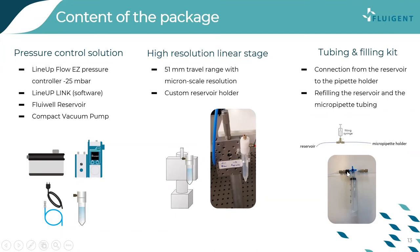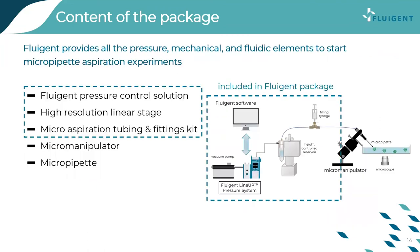There is a two-way valve that allows injection either into the reservoir part or the micropipette holder part. Thanks to this, you don't need to remove the reservoir and refill it — instead, simply use the tubing and filling kit to refill the reservoir and then switch the valve. In summary, the package includes the pressure control solution, the linear stage, and the microaspiration tubing and filling kit.